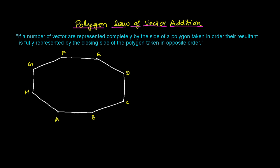So here I have a polygon. Let me count the sides: one, two, three, four, five, six, seven, eight — so it's an octagon. In this octagon, let's try to understand what the polygon law of vector addition is saying. You can draw any number of sides; if a number of vectors are represented completely by the sides of the polygon taken in order.